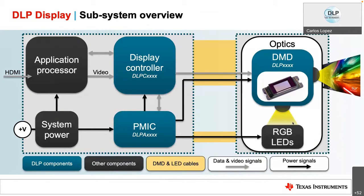Let's take a look at a typical subsystem for a DLP display. The components DLP offers are shown in blue. When you hear the term chipset, that typically refers to a controller — the part number usually starts with DLP C, which stands for controller — and a DMD. The DMD part number starts with DLP followed by numbers and letters, where the first couple of numbers represent the diagonal size in inches. DLP also provides a PMIC and LED driver as part of the chipset.